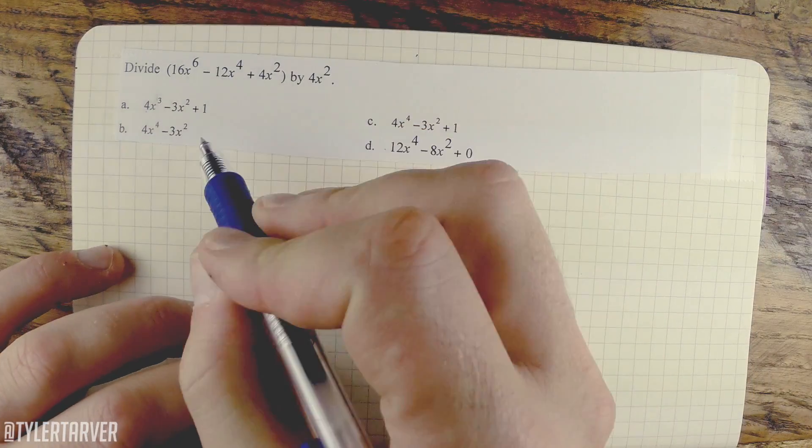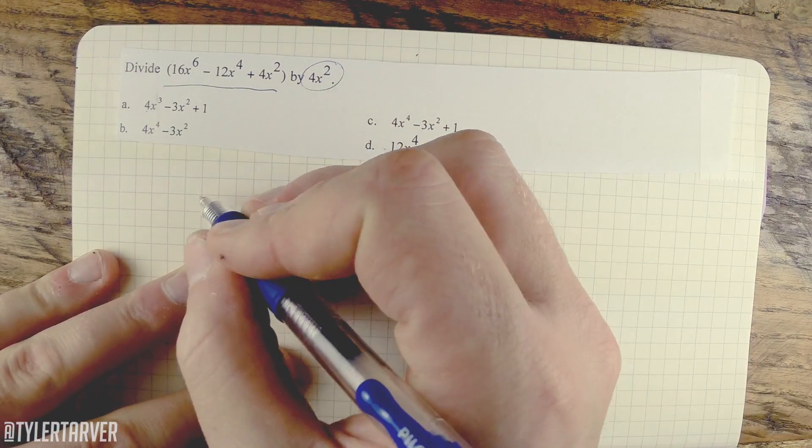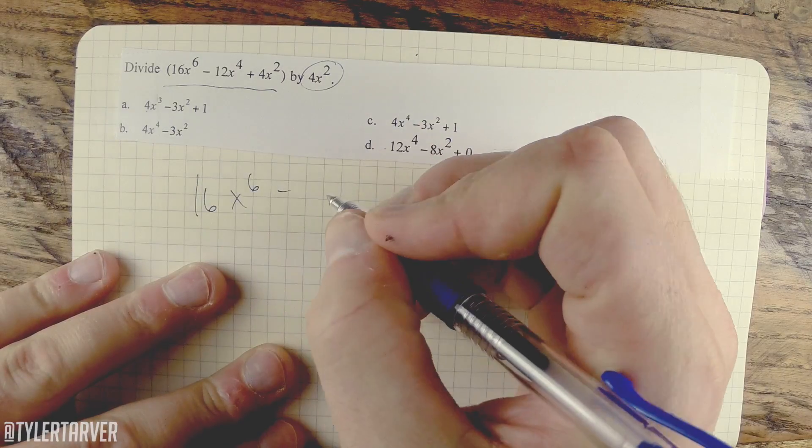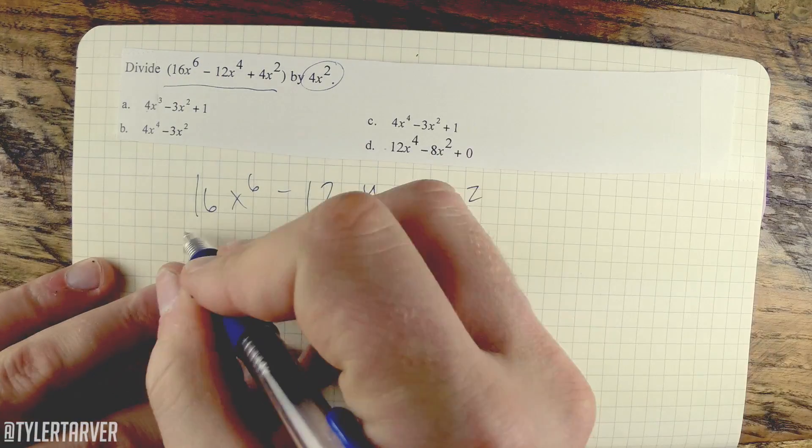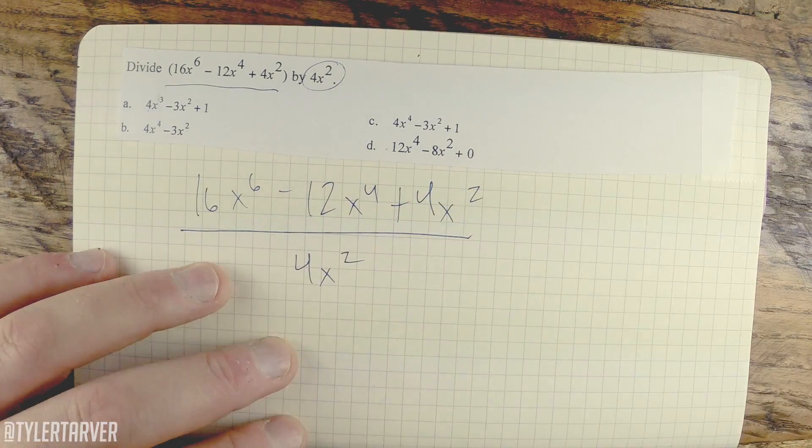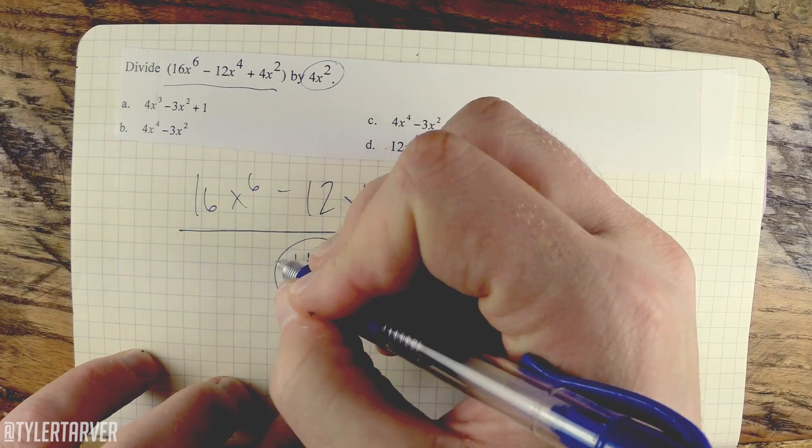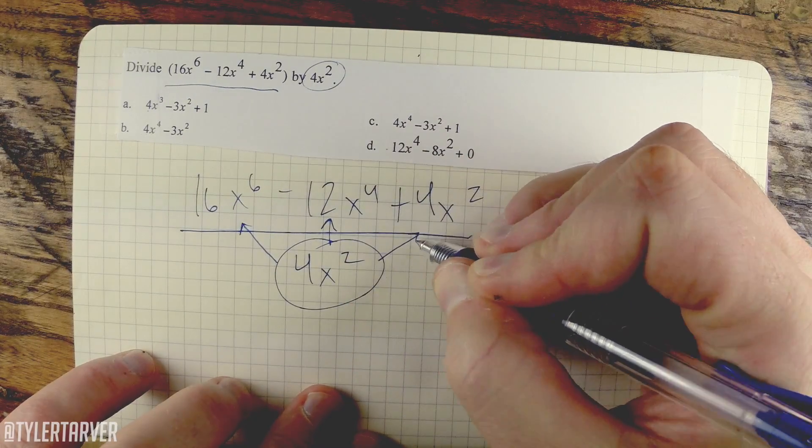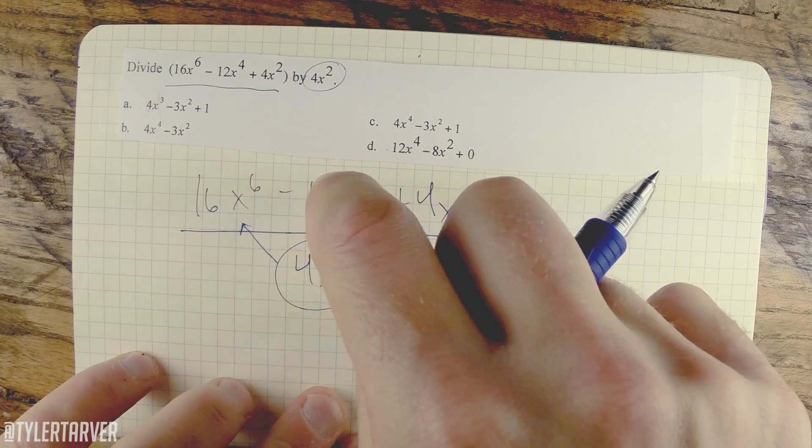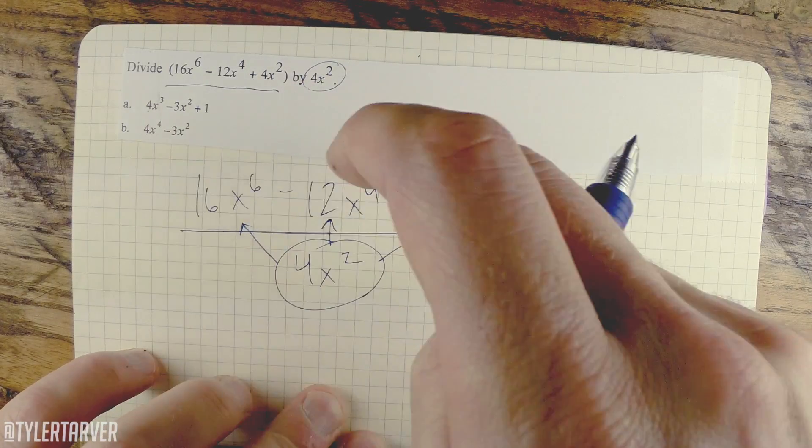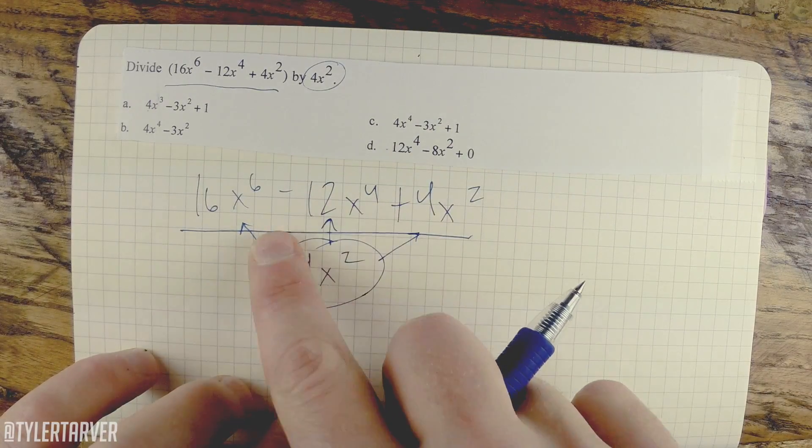Okay, so what we're gonna do is set up the problem first. We're dividing all of this by this. Let's take 16x to the 6th minus 12x to the 4th plus 4x squared and then we're dividing all that by 4x squared. Now the trick to this is you're gonna apply this to all three of these. We're gonna divide into every single chunk and they're separated by plus and minus signs. This is a trinomial because there are three monomials in there.